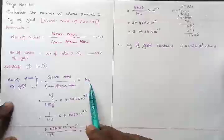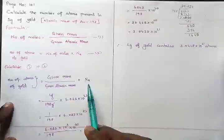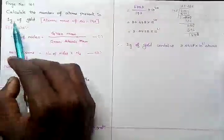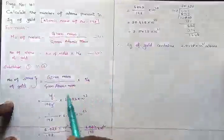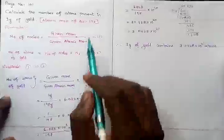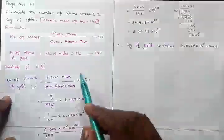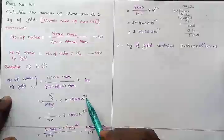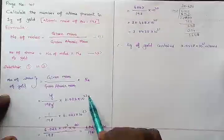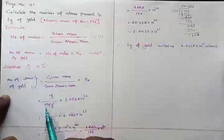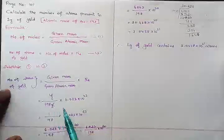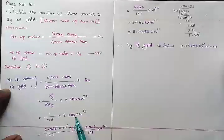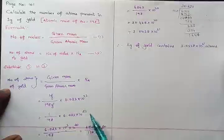After substituting, we get: number of atoms of gold = (given mass / gram atomic mass) × Avogadro's number. The given mass is 1 gram of gold, gram atomic mass is 198, and Avogadro's number is 6.023 × 10²³ atoms. The gram units cancel, leaving us with 1/198 × 6.023 × 10²³.